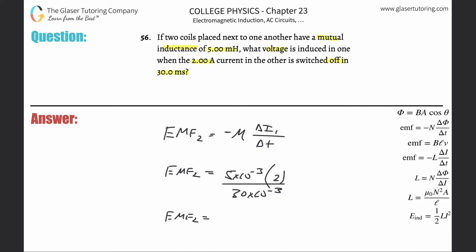Now take out the calculator: 5×10⁻³ times 2 divided by 30×10⁻³. We get about one third, 3.33×10⁻¹, and that'll be volts. Those are the units of EMF.